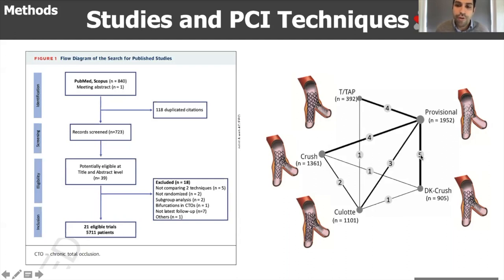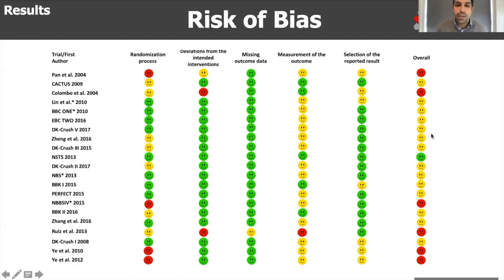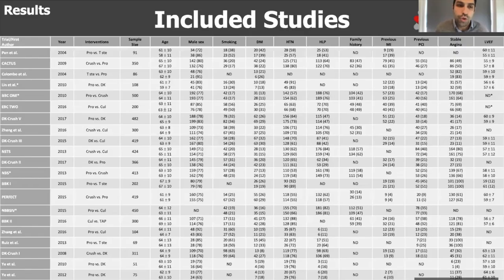For example, there are five trials comparing the provisional technique with the DK CRUSH technique, with the absolute number of patients shown in brackets. When we assessed the risk of bias, we found very few green faces in the overall column — most are yellow, meaning the quality of evidence was moderate. This is important to bear in mind when understanding the limitations and the overall conclusions.